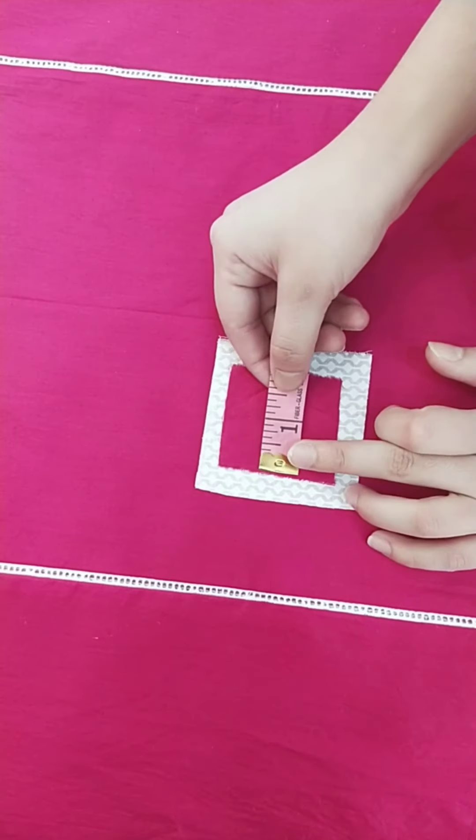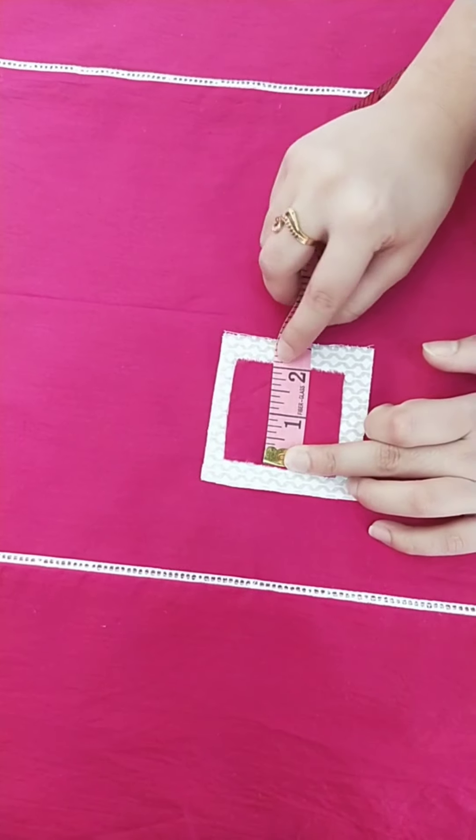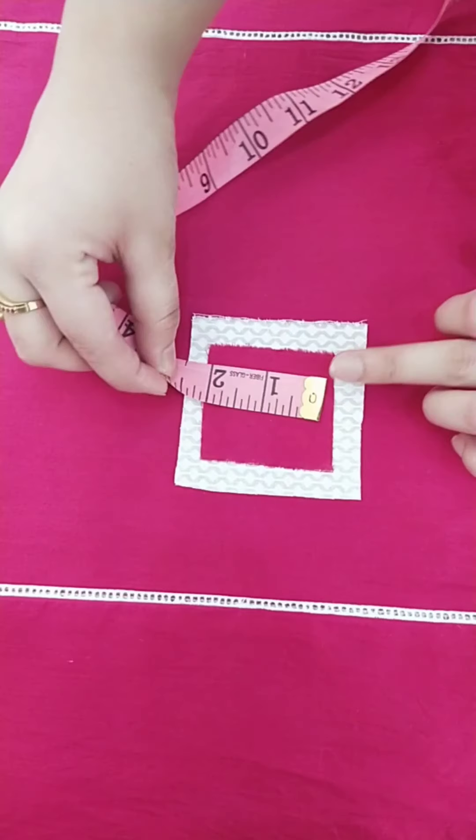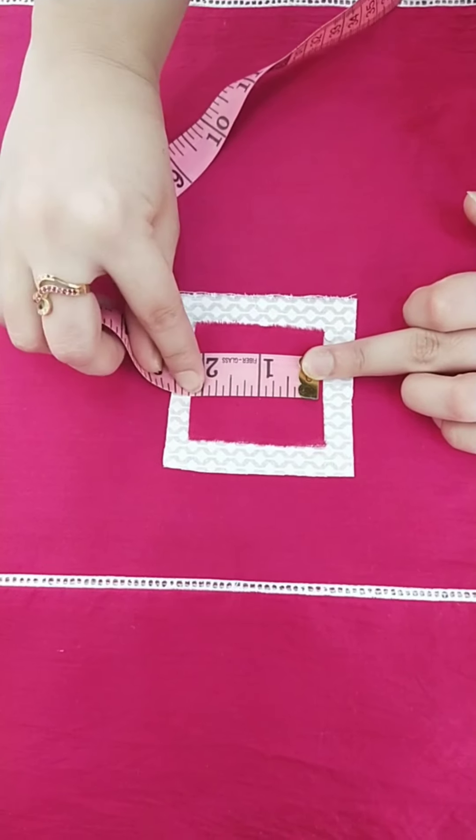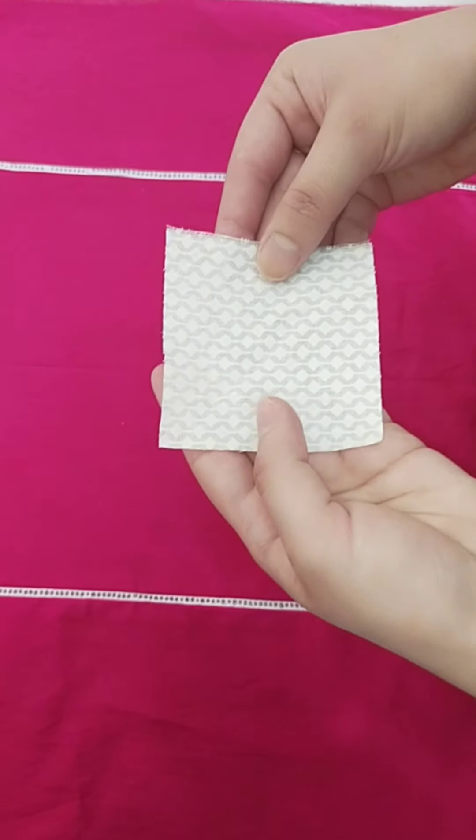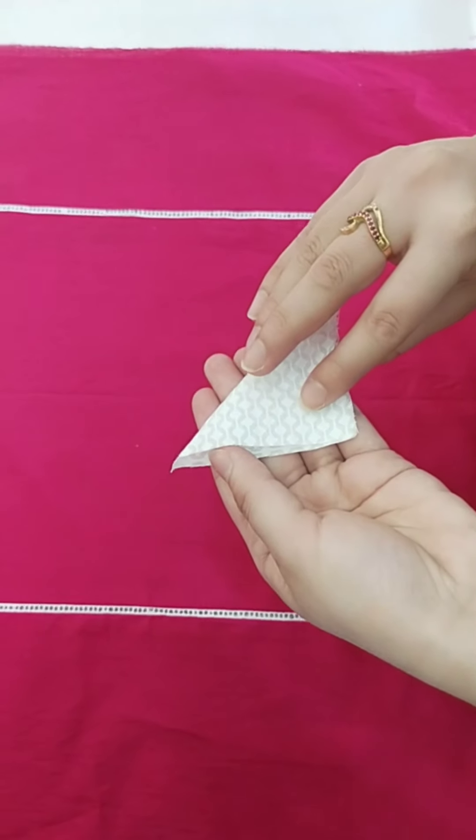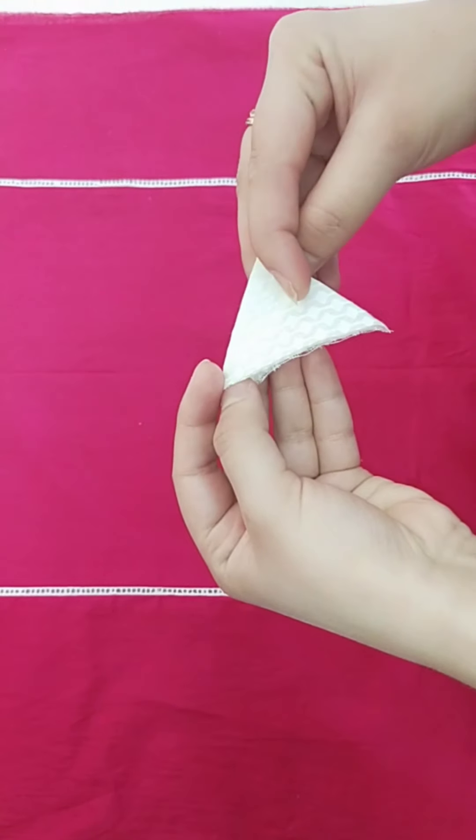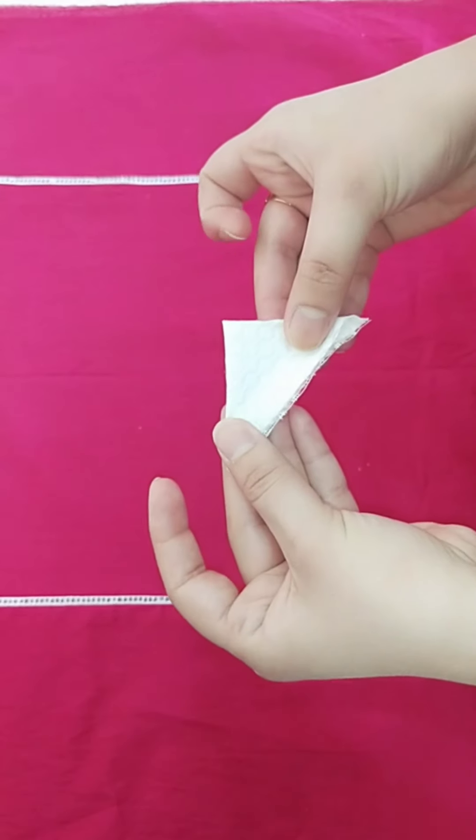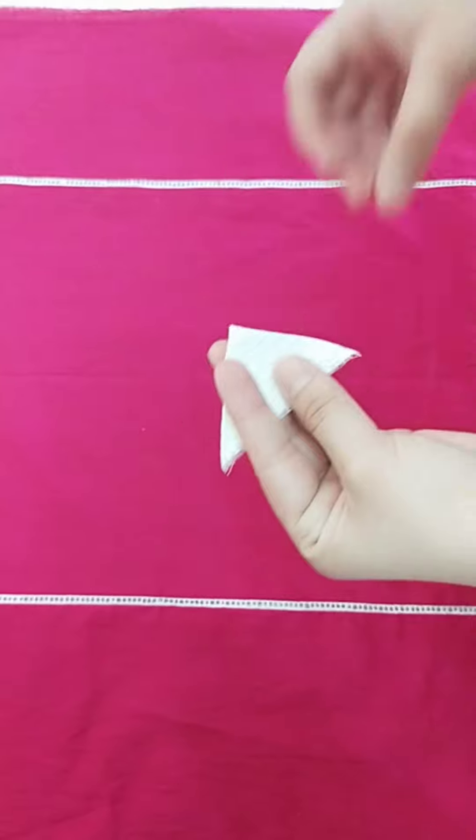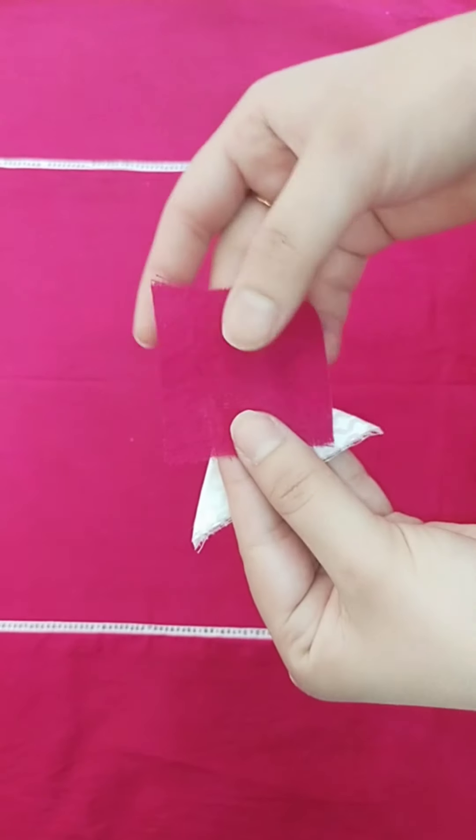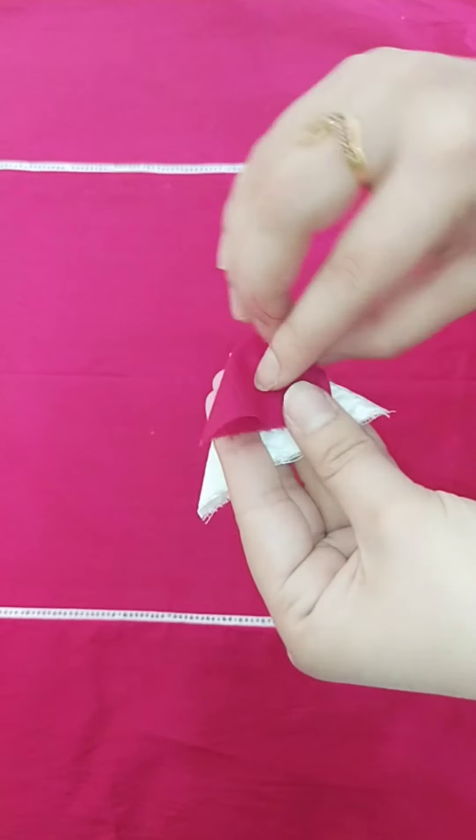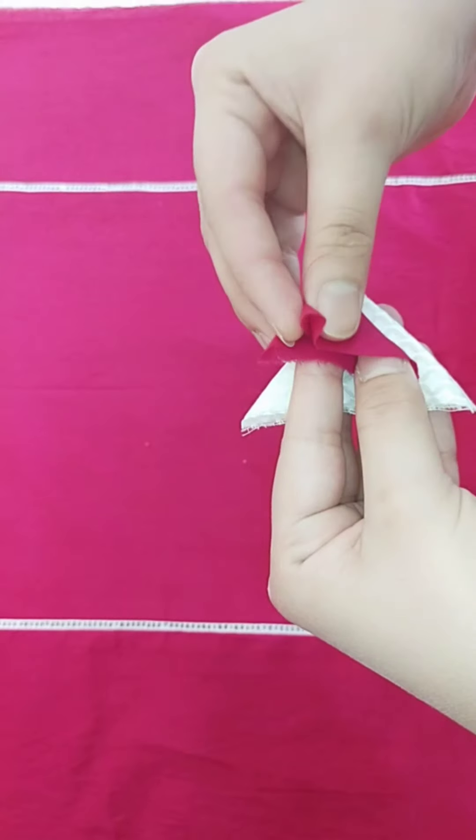Now we will make the fabric triangles. We will fold it into a triangle shape. I have used a small triangle, and then we will be making the fabric like this.